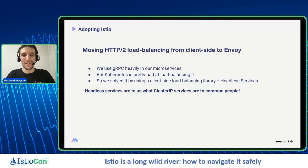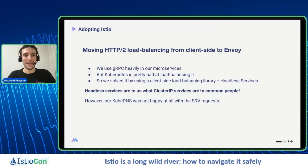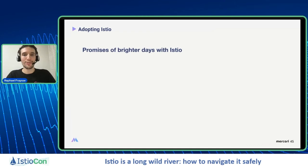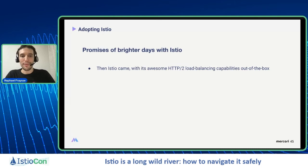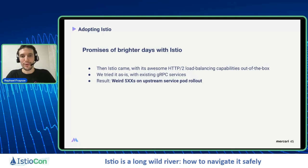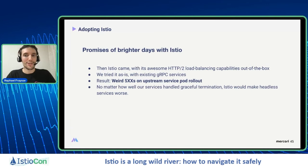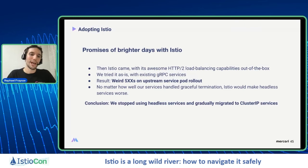However, our kubeDNS was not happy with all the SRV requests from that library. So we were considering options when Istio came with its awesome HTTP/2 load balancing capabilities out of the box. We tried it with our existing gRPC services, but the result was weird 5XX errors and upstream service port rollout were happening. No matter how well our services handled graceful termination, Istio would make the headless services worse. So we stopped using headless services with Istio and gradually migrated to cluster IP services.